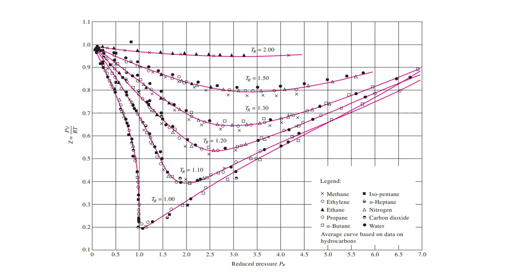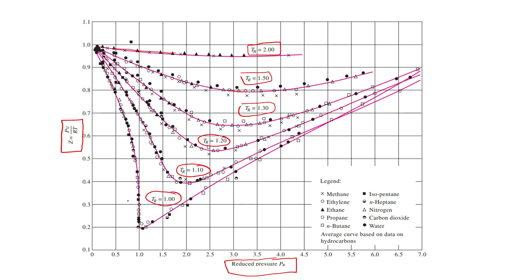The law of corresponding states: on the compressibility factor chart, the y-axis is Z equal to PV over RT, the compressibility factor, and the x-axis is reduced pressure. There are curves for constant reduced temperature: TR equals 2, 1.5, 1.3, 1.2, 1.1, and 1.